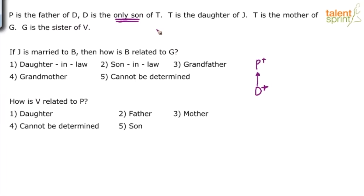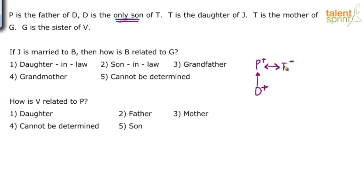But now it says D is the only son, so first of all D is male — the only son of T. We already know that D is the son of P, and now it says D is the son of T as well. So obviously P and T are a married couple. And because we know that P is male, T has to be female. So indirectly, we know the gender of T.